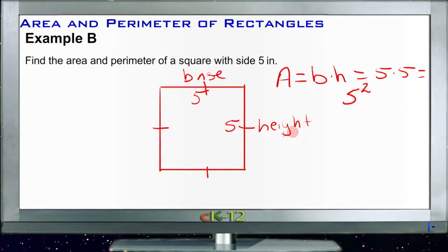So really, if we have a square instead of a regular rectangle, we can just take one side and square that value to find the area. 5 squared, of course, is 25. And it says that our units are inches, so our area would be 25 inches squared.